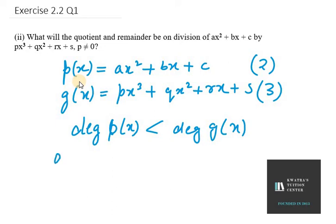So what we will get from this is that quotient will be 0 and remainder will be equal to g(x) because it is not divisible.